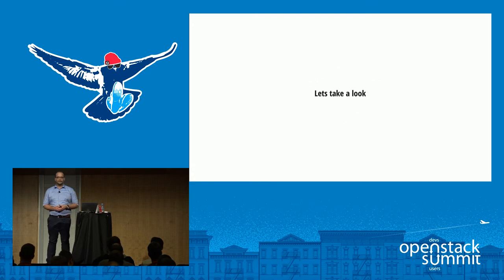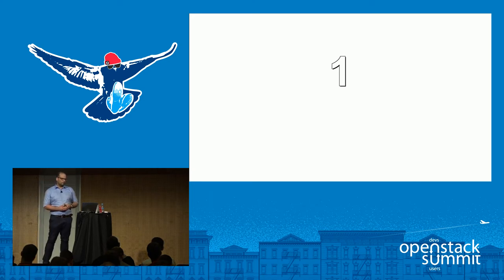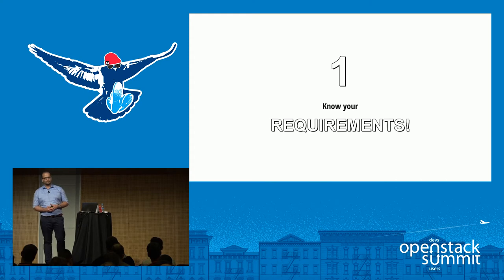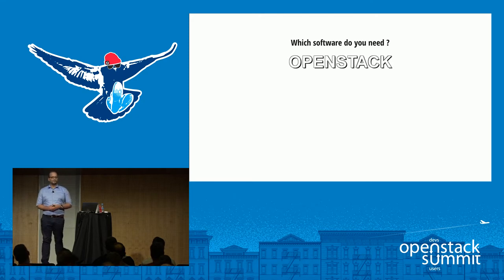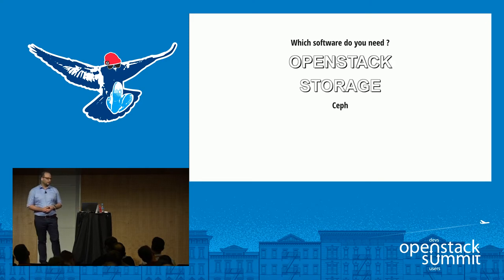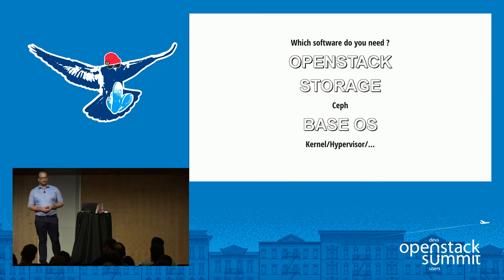Let's take a deeper look at that. If you start evaluating for your organization whether to choose vanilla or a distribution, you should first know what your requirements really are and what your use case is. You may consider topics like which software you need — in this case, simply OpenStack. You also need storage, and in my presentation I assume Ceph for it, and you need a basic operating system including the kernel, hypervisor, and so on.